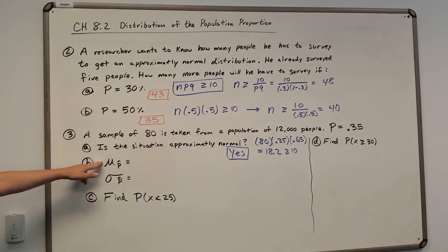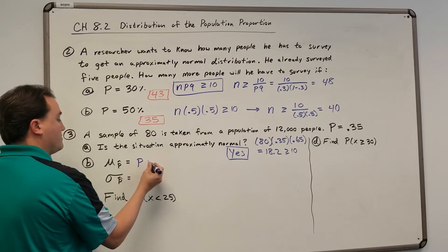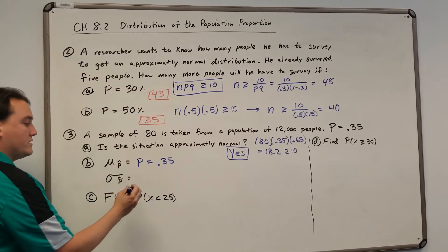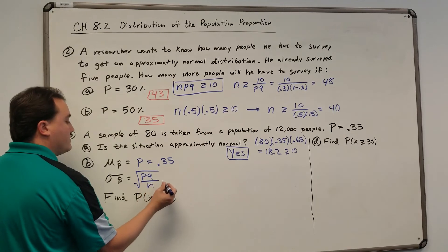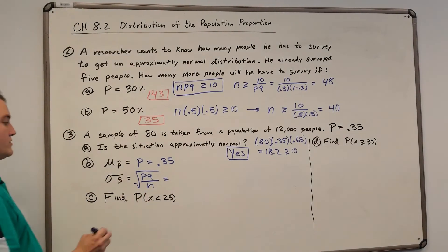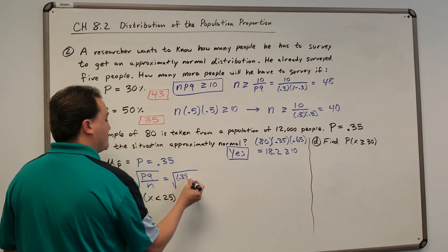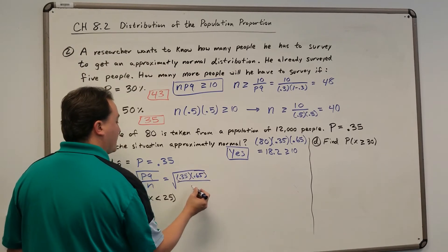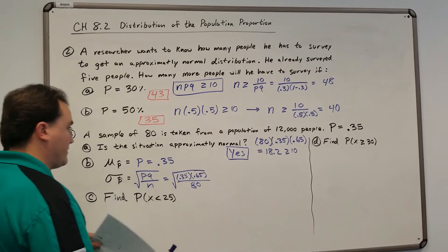We need to find the mean, which is always just P, so the mean is 0.35. The standard deviation is the square root of P times Q divided by N: the square root of 0.35 times 0.65 divided by 80, which gives us 0.0533.